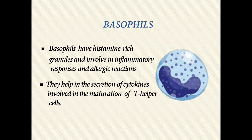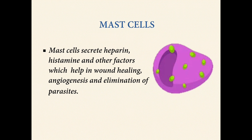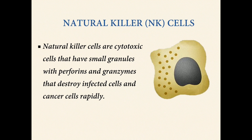Basophils have histamine-rich granules and are involved in inflammatory responses and allergic reactions. They help in the secretion of cytokines involved in the maturation of T helper cells. Mast cells secrete heparin, histamine, and other factors which help in wound healing, angiogenesis, and elimination of parasites. Natural killer cells are cytotoxic cells that have small granules with perforins and granzymes that rapidly destroy infected cells and cancer cells.